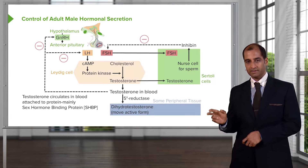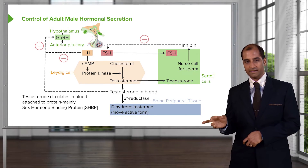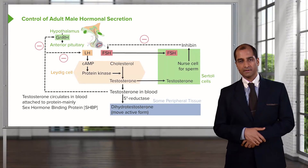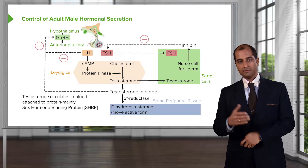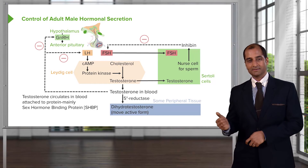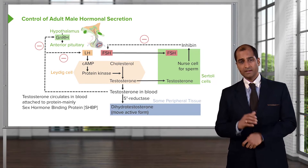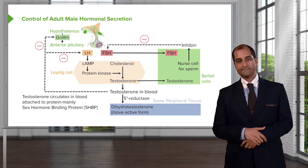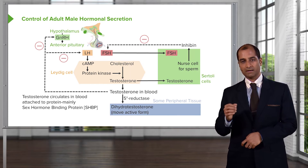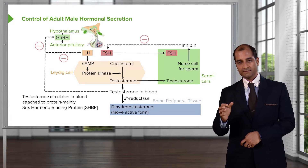Testosterone has two routes of exit from the Leydig cell. The first route goes directly into the Sertoli cell. Since testosterone is lipid soluble, it passes through the blood-testis barrier with no problem. Once inside the Sertoli cell, the question is: how do you guarantee that testosterone will not leave the Sertoli cell?